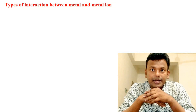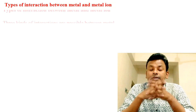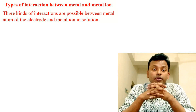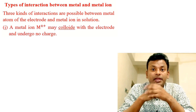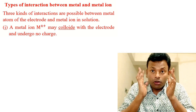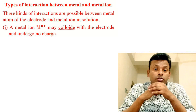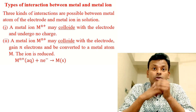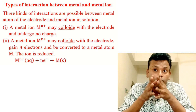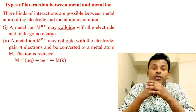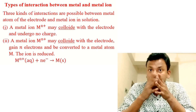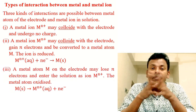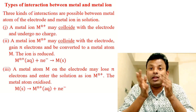There are three kinds of interaction possible between the metal atom of the electrode and the metal ion in solution. First, a metal ion Mⁿ⁺ may collide with the electrode and undergo no change. Second, a metal ion Mⁿ⁺ may collide with the electrode, gain n electrons, and be converted to the metal atom M — that is, the ion is reduced: Mⁿ⁺ + ne⁻ → M.